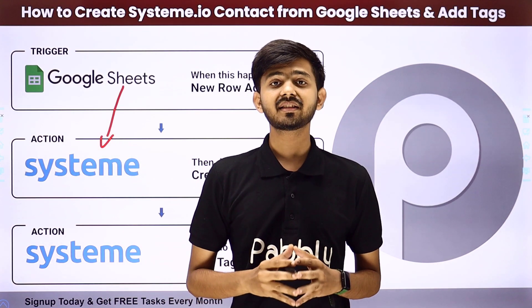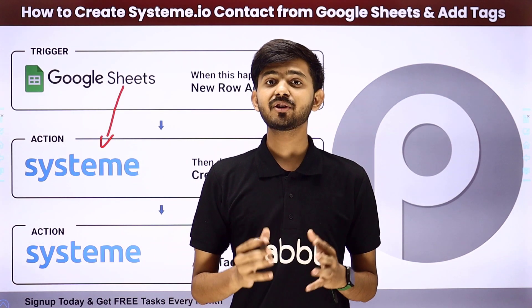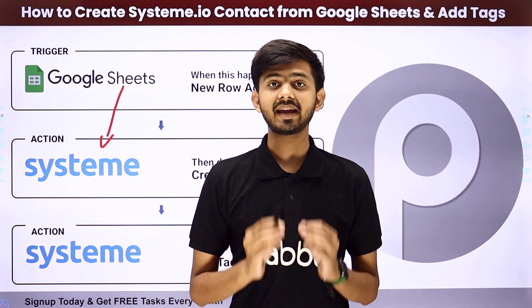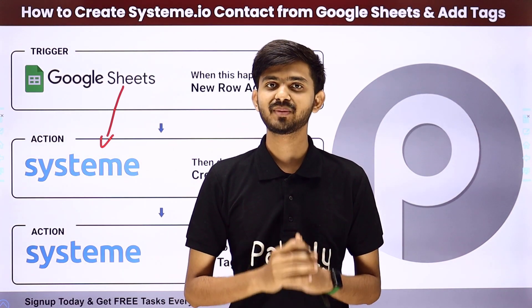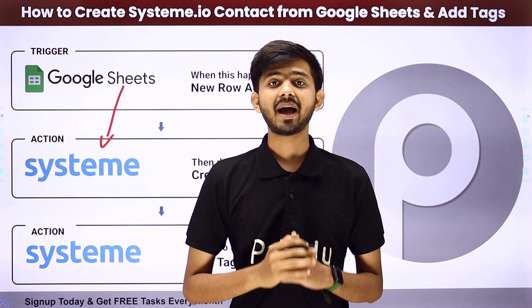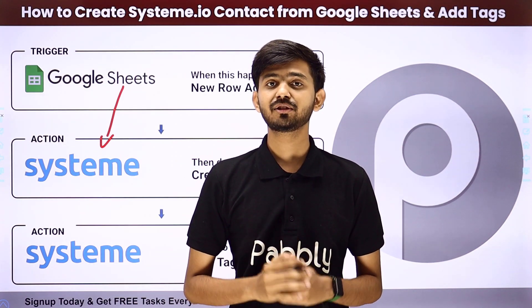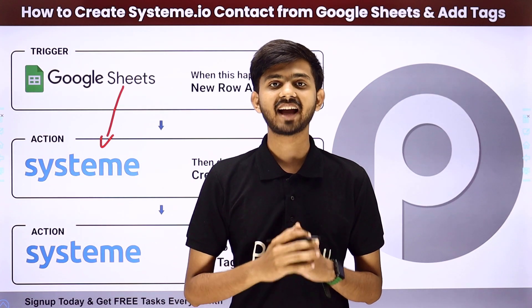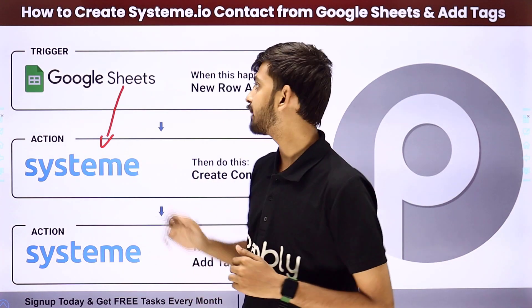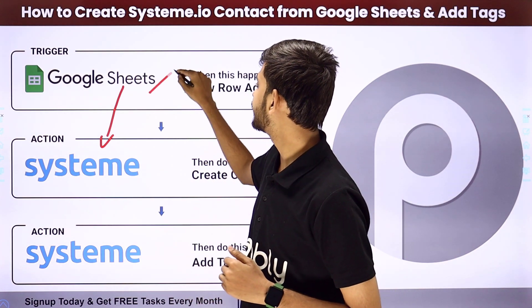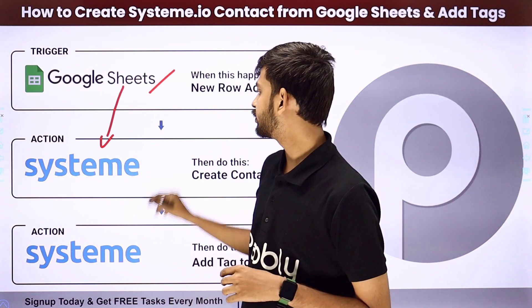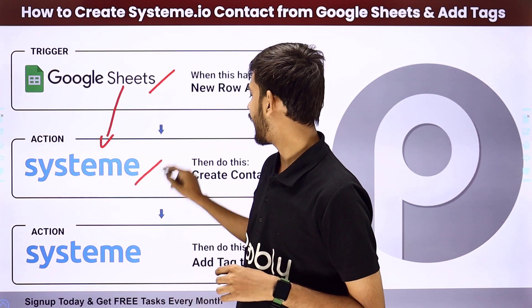For creating this integration we are going to use Pabbly Connect, which is an amazing software for automation and integration. In Pabbly Connect we are going to use Trigger and Action. In the Trigger application I am going to use Google Sheets, and in the Action application I am going to use Systeme.io.